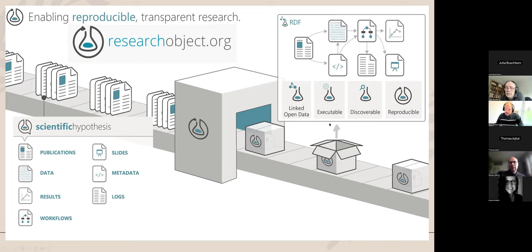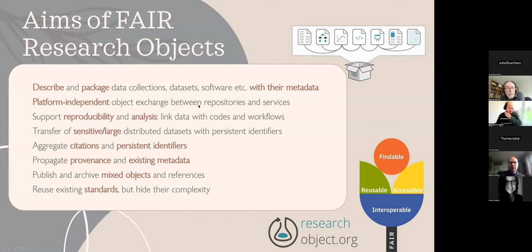The idea of RO-Crate is to gather these in a virtual package. It may include some actual files, but it may include some references out there, and then these are related together, giving brief descriptions so we know what they are and why they are in this collection. So this is our main aim.